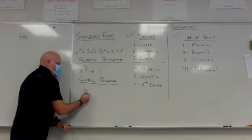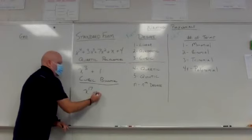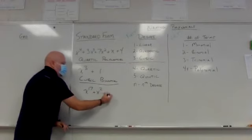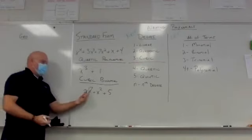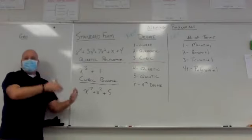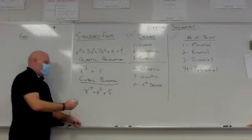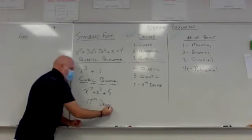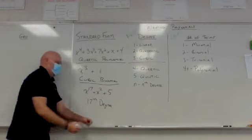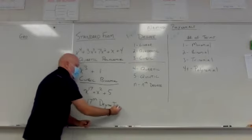You can call it, so if it's x to the 17th plus x squared plus five, the biggest one is 17 and we don't have to memorize all the names of every number, so we're just going to call it 17th degree. And it's got one, two, three parts, so it's a trinomial.